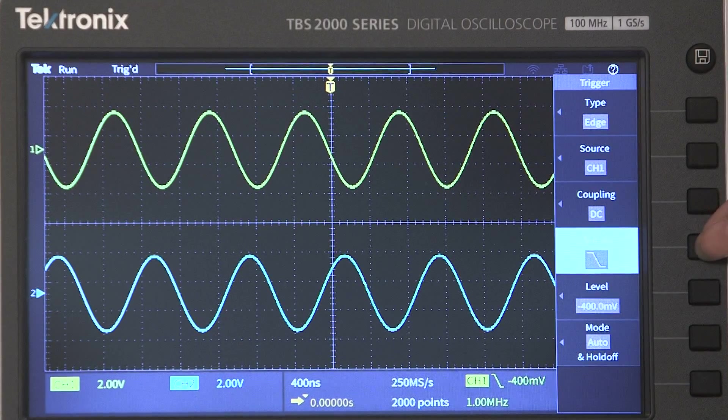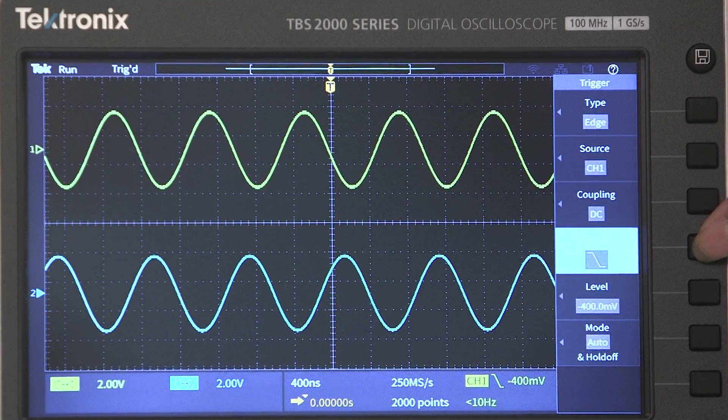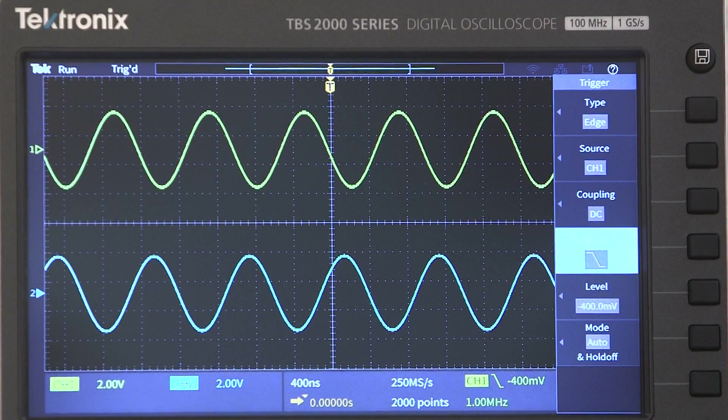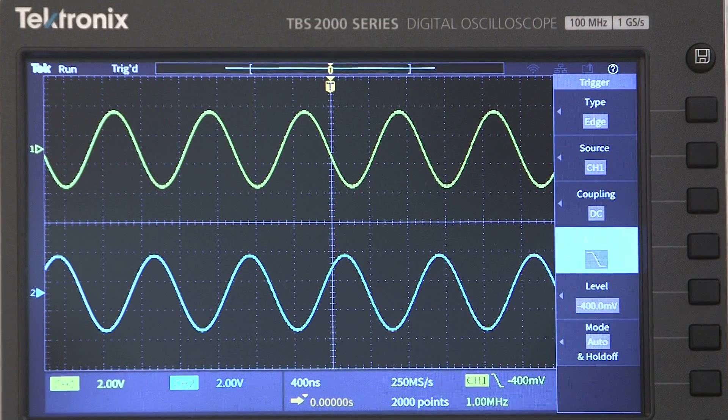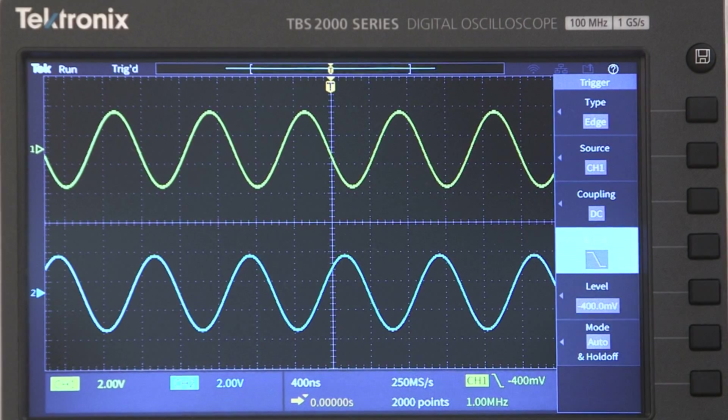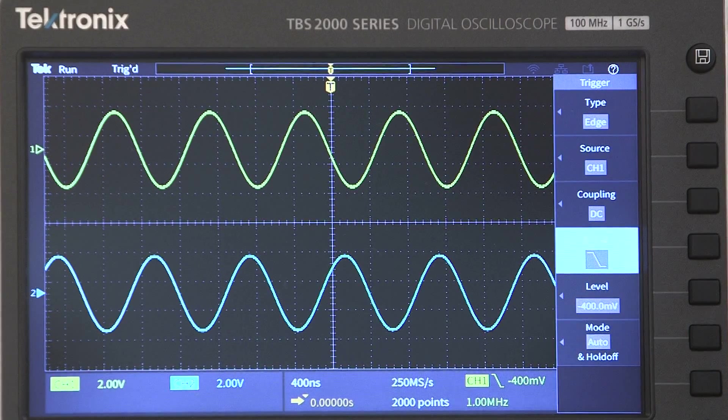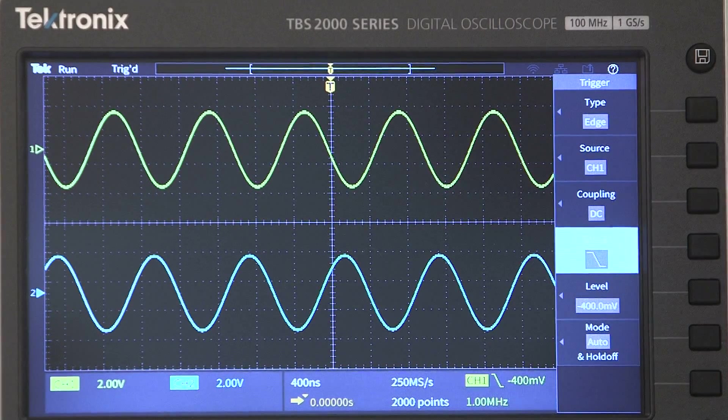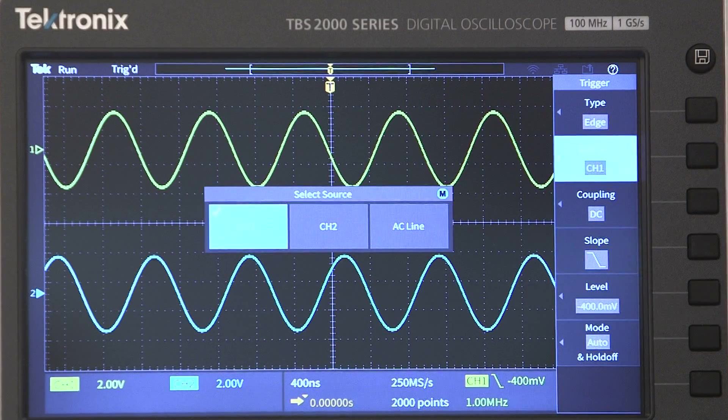You can change the slope setting from rising to falling. See how the trigger point moves from the rising to the falling signal? This is a two-channel scope, and either channel can be used as a trigger source. Watch how the trigger changes from signal to signal when I change the source.